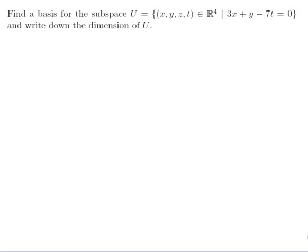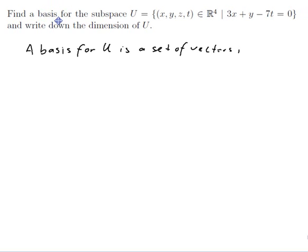Alright, well as usual I need to understand the problem in order to do it, so let's have a look. A basis for U is a set of vectors in U which, one, span U — which means that everything in U is a linear combination of them — and two, are linearly independent, which means none of them is a linear combination of the others. The definition involves trying to solve a linear combination equal to 0, and only being able to do that if all the coefficients are 0.